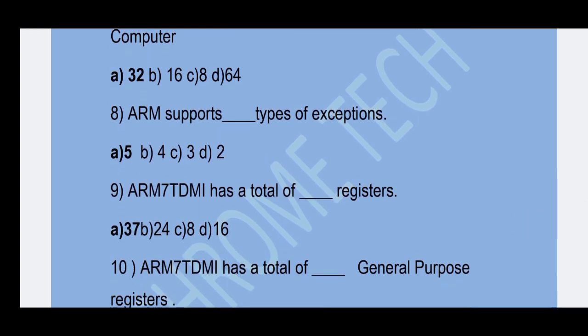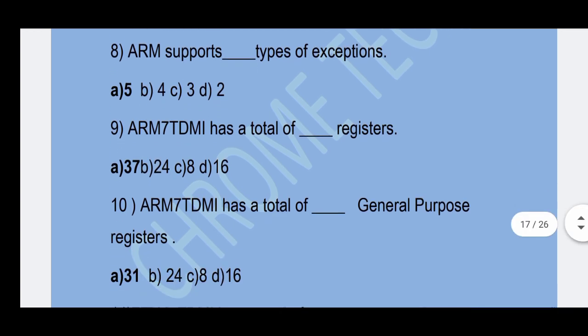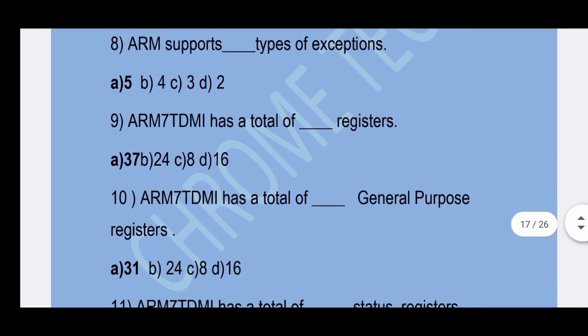Next question: ARM supports how many types of exceptions? Option A — 7 (5 types noted) is the correct answer.